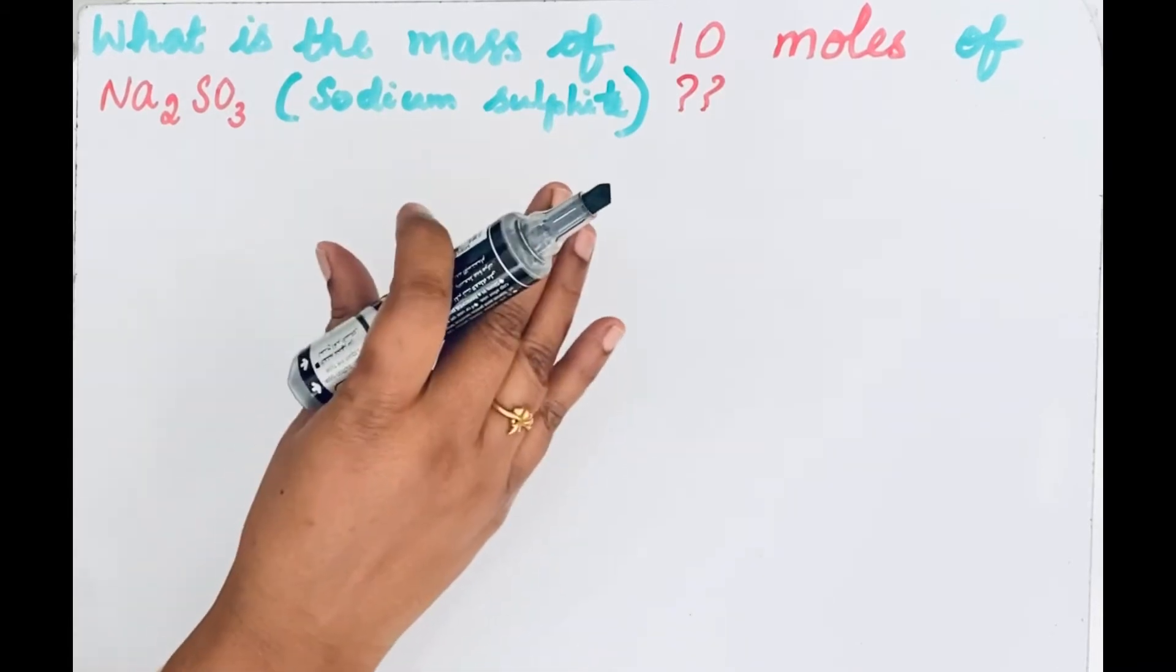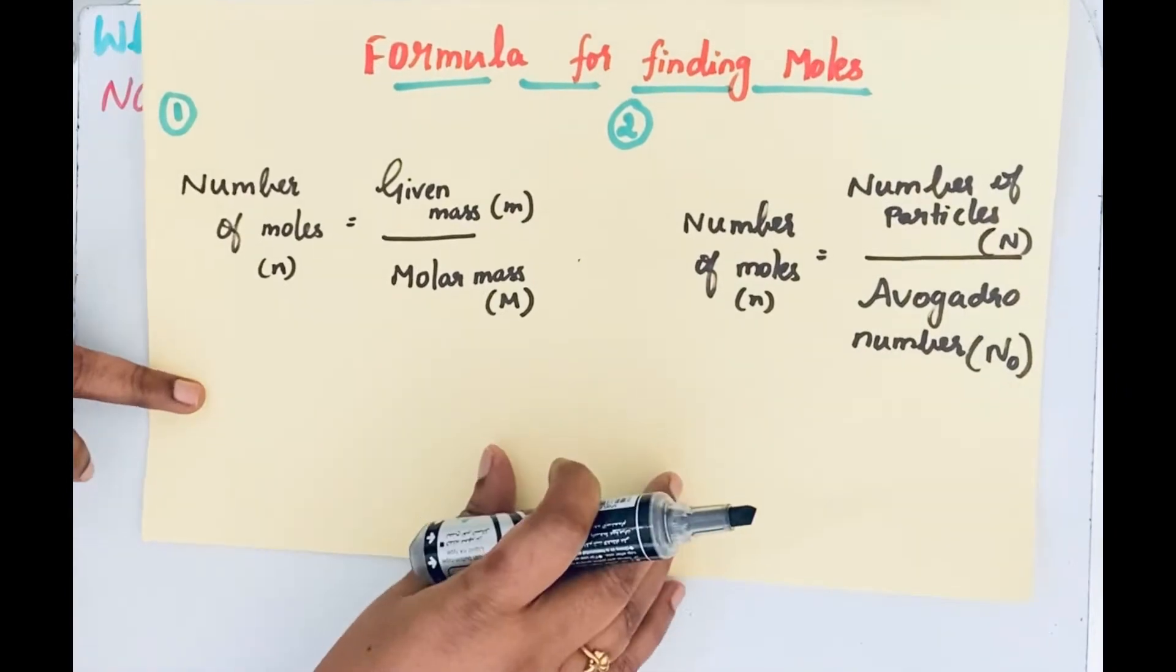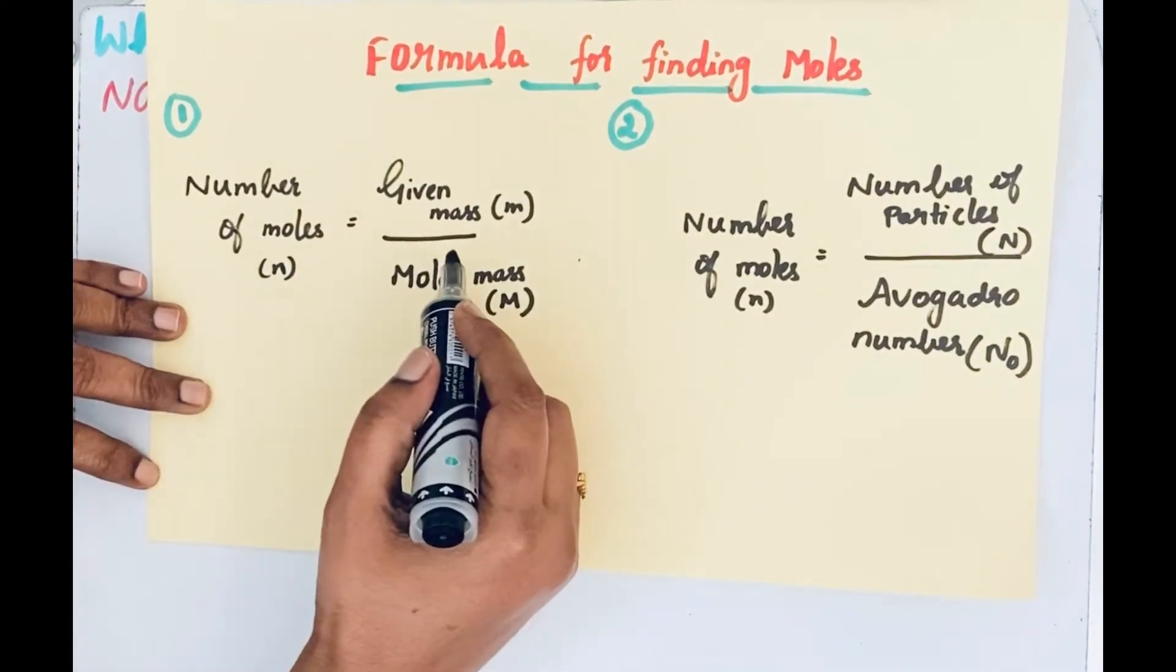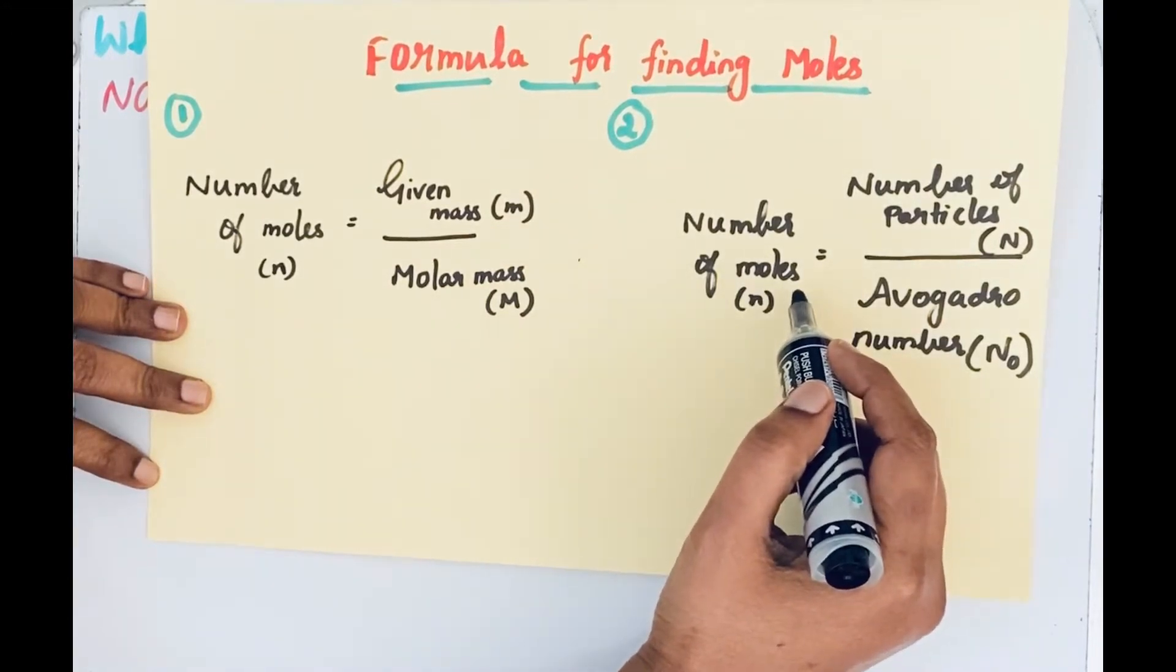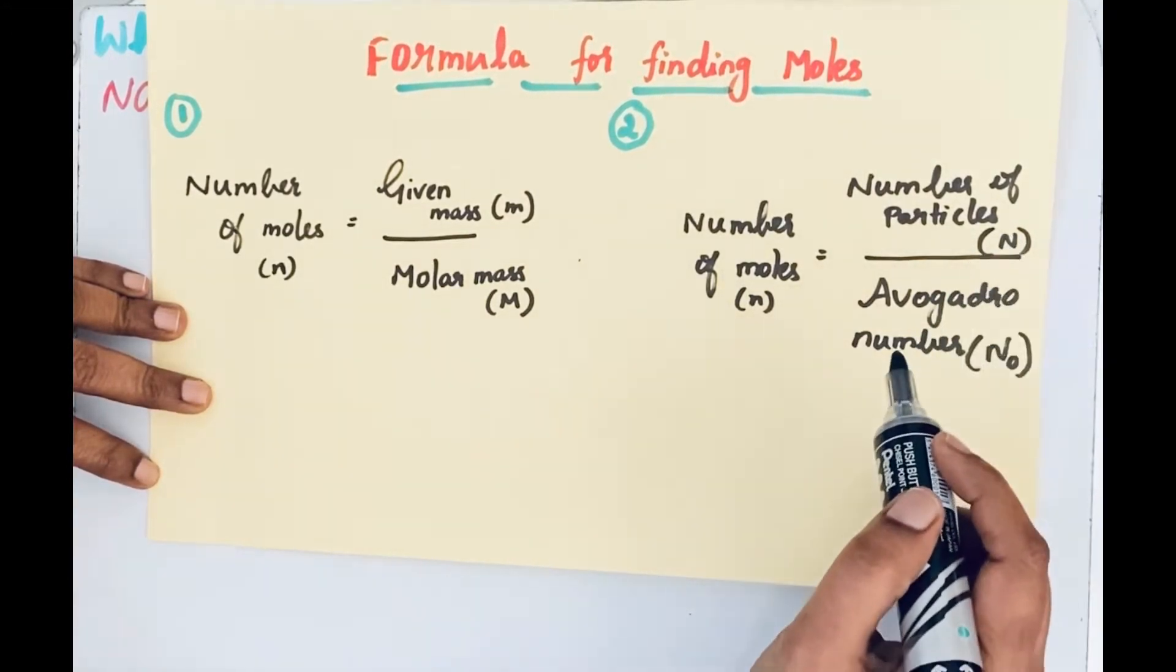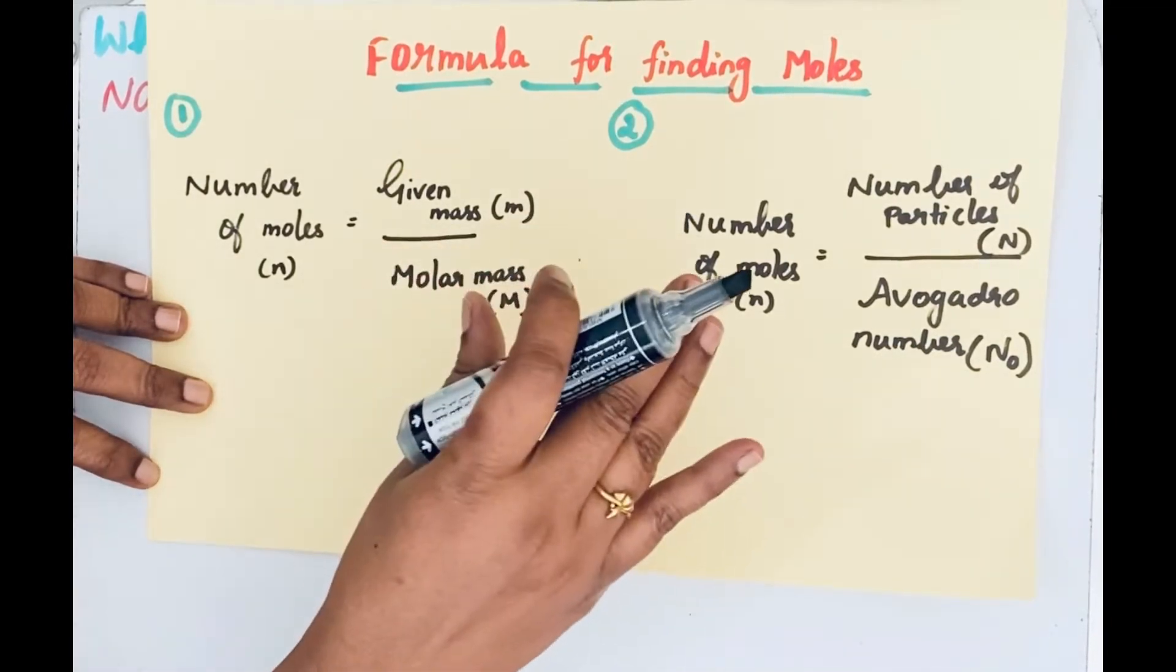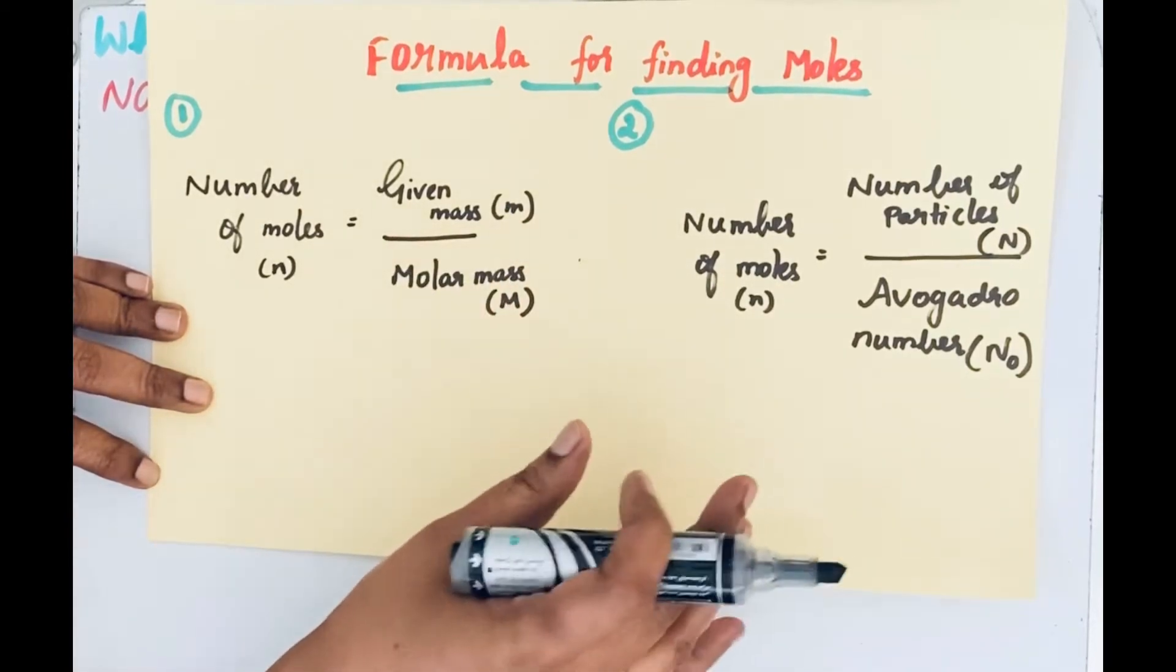Whenever a question comes regarding moles, please try to remember this formula. The first formula is: number of moles equals given mass divided by molar mass. The second one is: number of moles equals number of particles divided by Avogadro's number. So when the question comes regarding moles, try to apply one of these formulas.